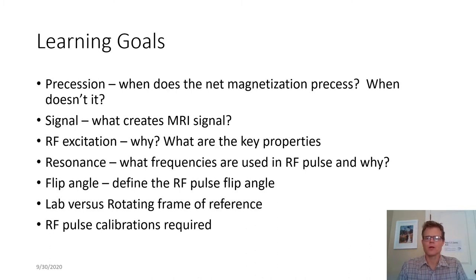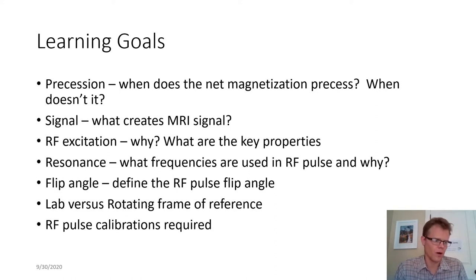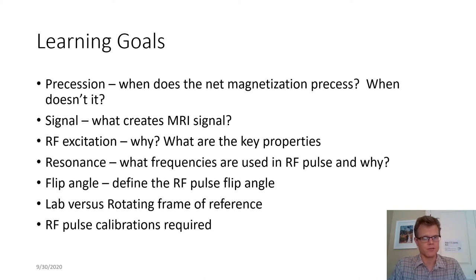Here are the learning goals for this lecture. We're centered around the RF, which is related to the resonance part of magnetic resonance imaging. It's related to our RF systems, our RF transmit coils, and our RF receive coils. This process is the way that we both generate signal and receive signal.